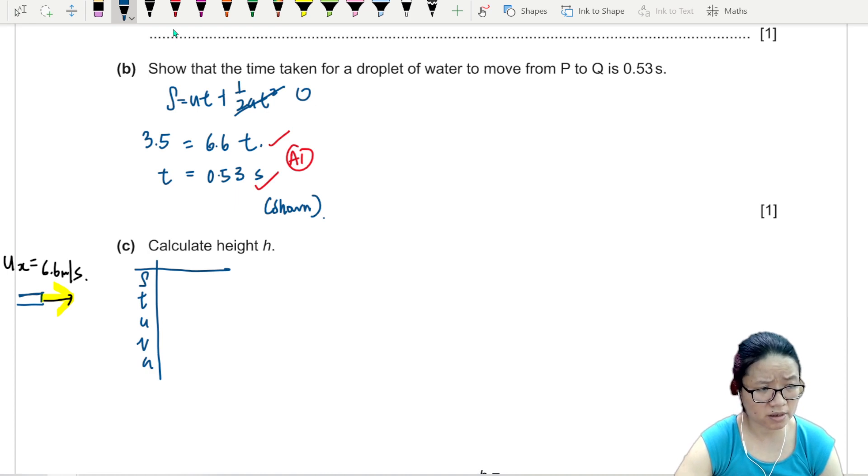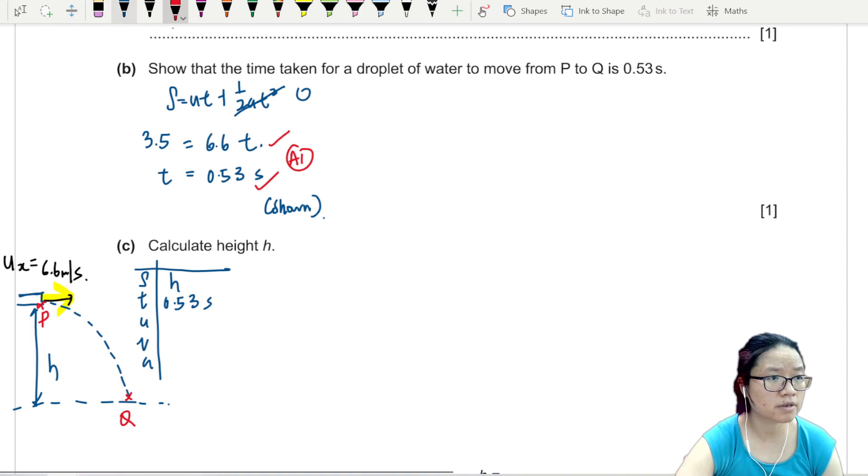The water shoots out from the hose fully and entirely horizontal, which means this S, which is h by the way, it's going to go down like this. And here to here is h. So this will be h. T is 0.53 because the water will travel from P to Q in 0.53 seconds. Initial speed is 0 because there's no vertical velocity.